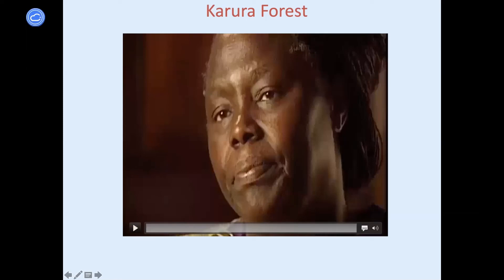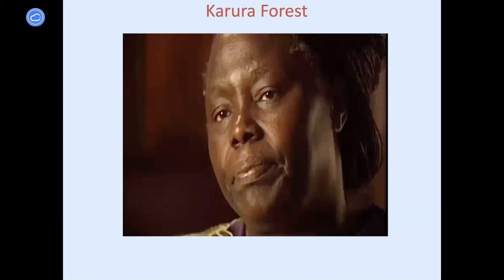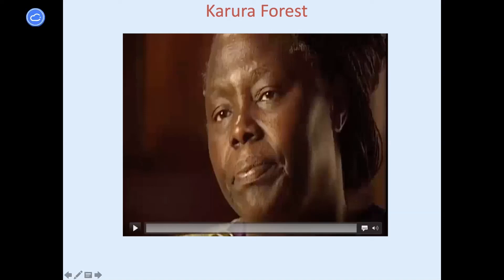I want to ground the struggle between the autocratic regime and the Greenbelt movement in two key moments. The first involved Karura Forest, a big green lung outside Nairobi — publicly owned and vital for biodiversity. What happened was that Arap Moi started allowing his cronies to cut down trees to sell for timber, to build golf courses, condos and things like that. So there was a privatization by stealth of this publicly owned forest.